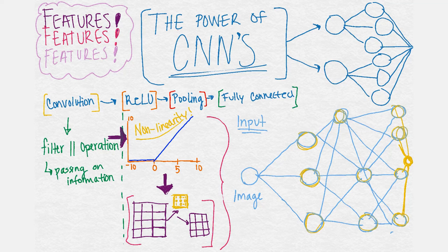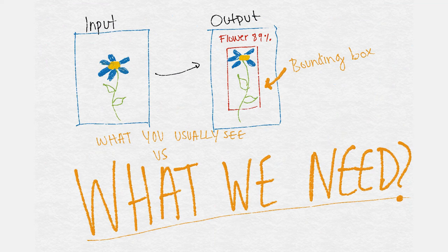And so what a fully connected neural network means is that the subsequent nodes of the neural network are all connected to each other. So now image recognition.